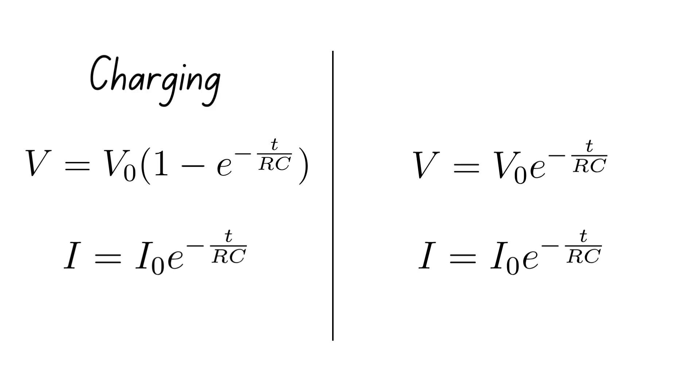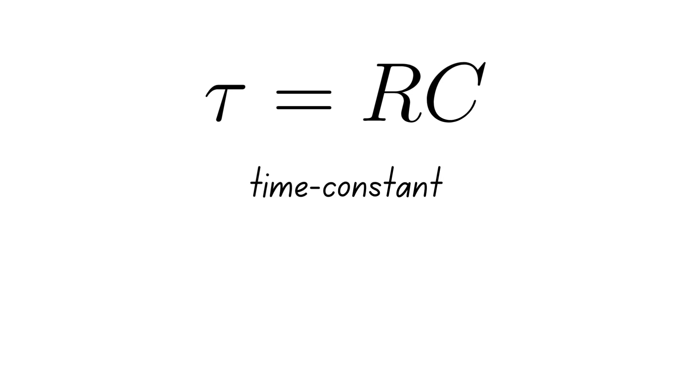From the equations for charging and discharging a capacitor, you can notice a common expression, which is the product of capacitance C and resistance R. This product is known as the time constant of a capacitor and is defined as the time it takes for a capacitor to charge up to 63.2 percent of the supply voltage.